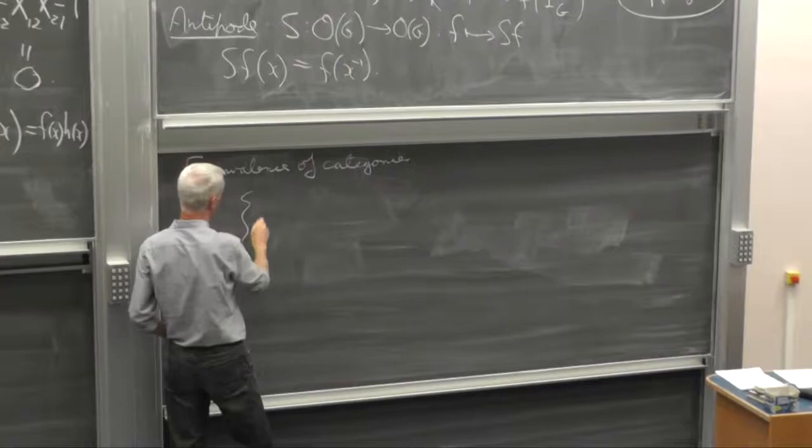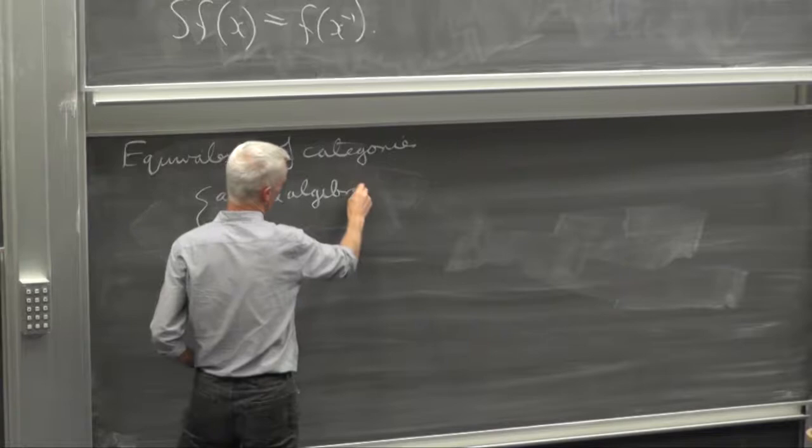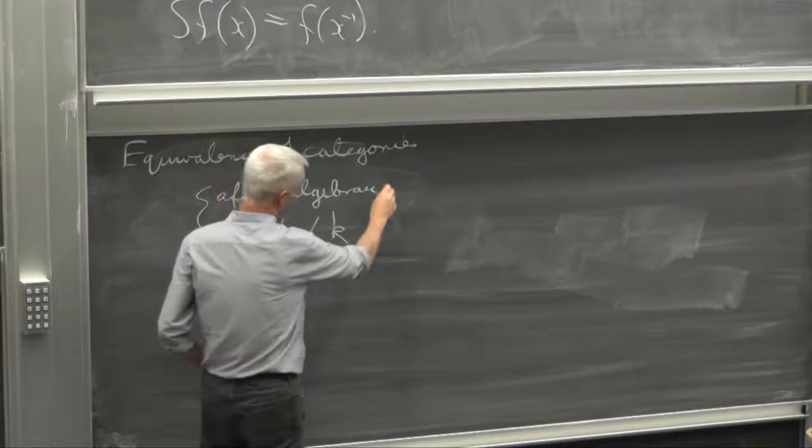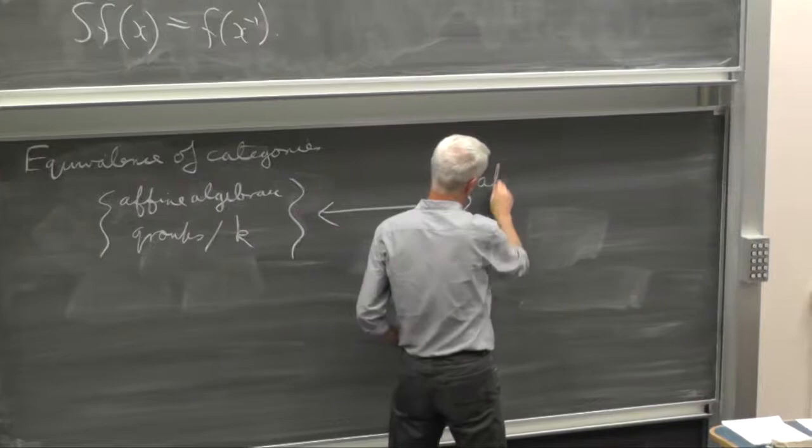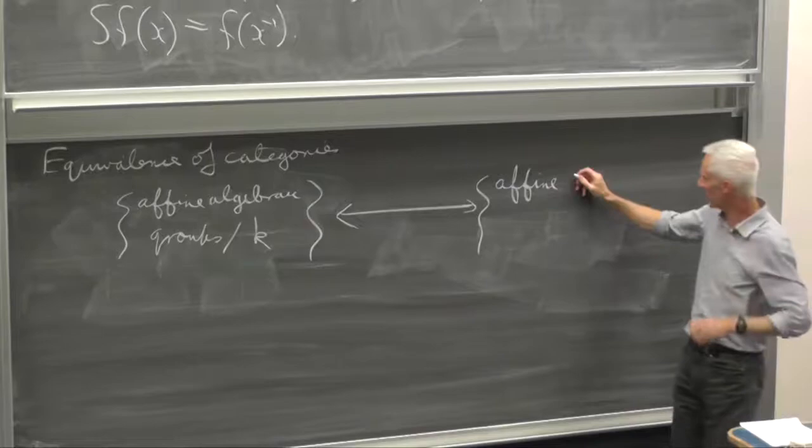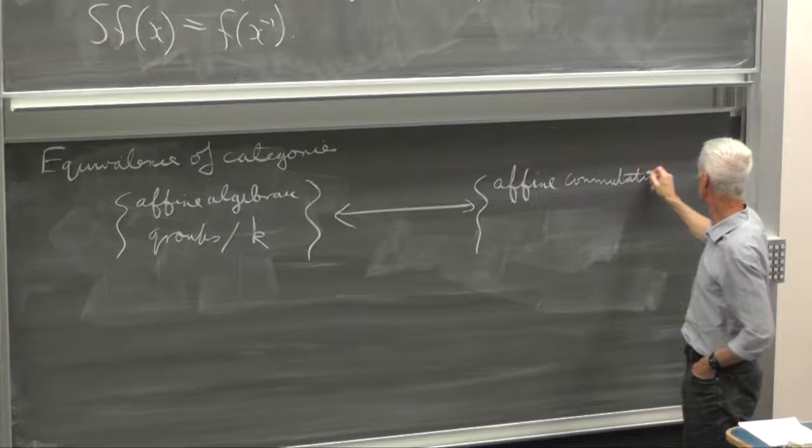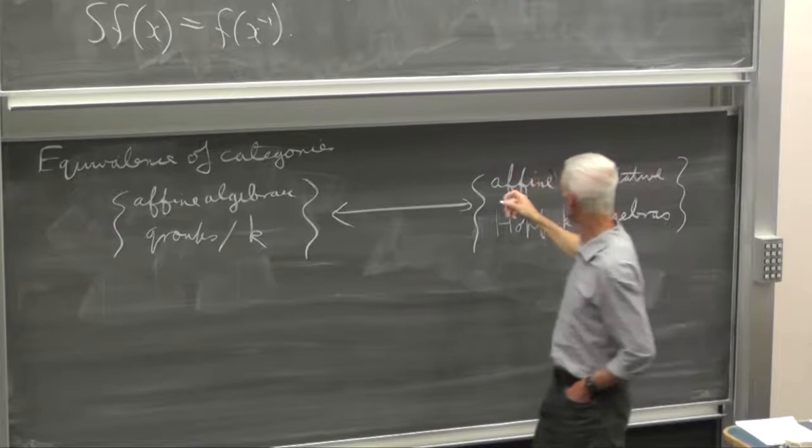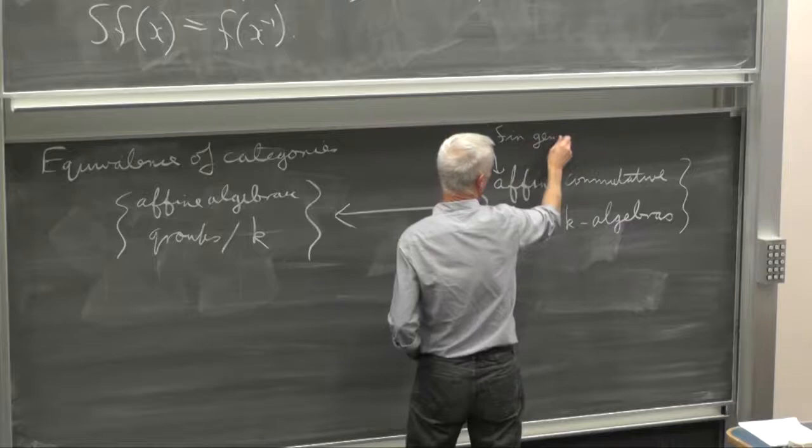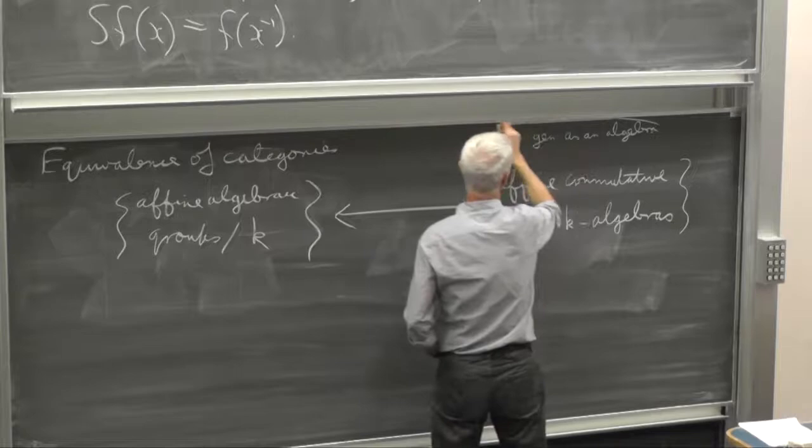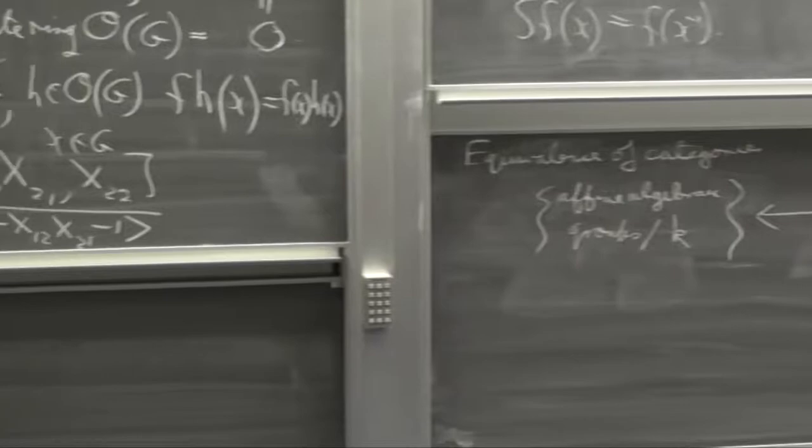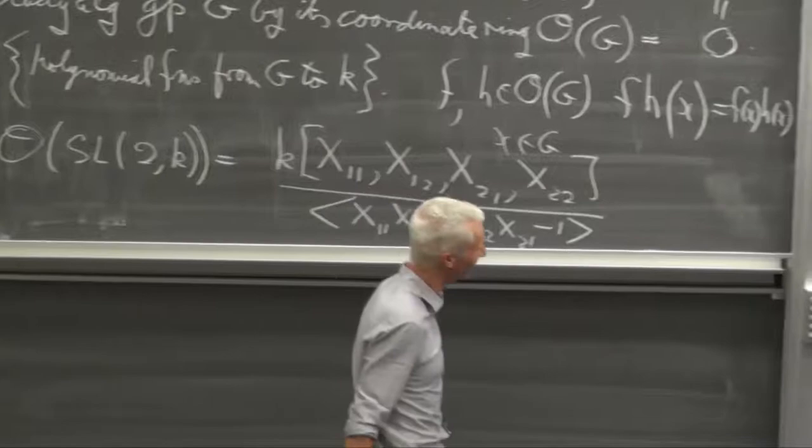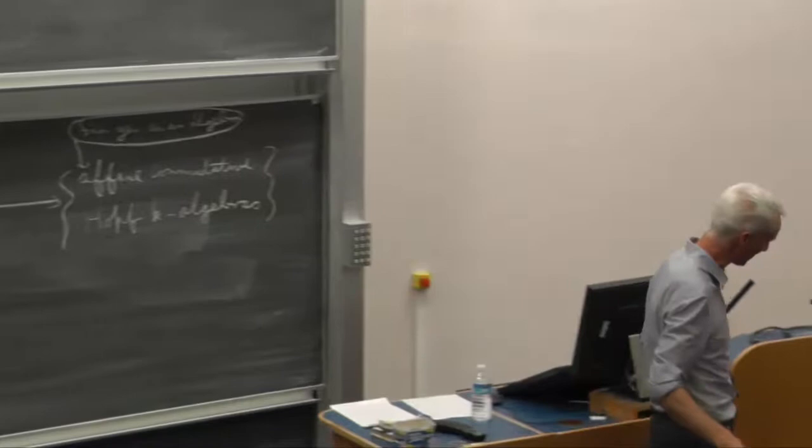All that structure together gives you a Hopf algebra over K, and it's commutative because the ring is commutative. So it turns out this is a brilliant gadget because we in fact get an equivalence of categories. On the one hand, affine algebraic groups, and on the other hand, commutative Hopf algebras. Affine here just means finitely generated as an algebra, and affine here means it matches up with something which is finitely generated as an algebra.